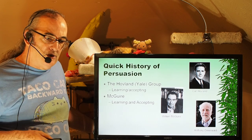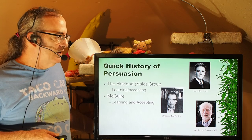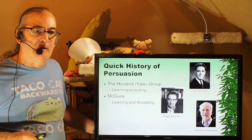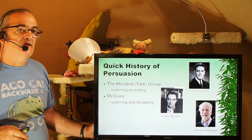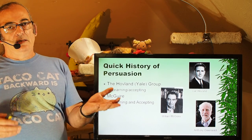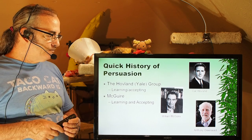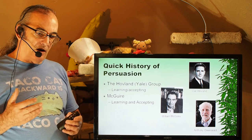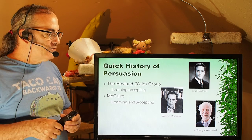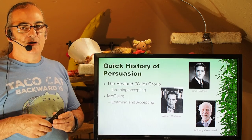Hovland found through his research that if you want to persuade someone — that is, to get them to accept a message — they have to learn the message. It's a very simple formula: the more that they learn the message, the better they learn it, the more likely they will be persuaded. That idea floated around for a while, but other social psychologists began to question it.